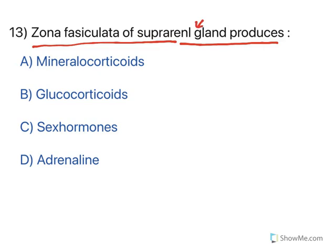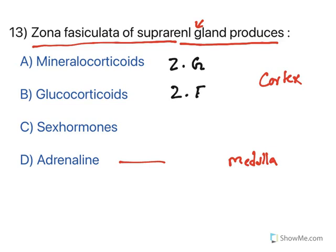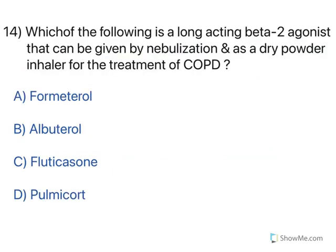Zona fasciculata of the suprarenal gland produces: the adrenal gland has medulla and cortex. The medulla releases adrenaline. The cortex has three zones — zona glomerulosa, zona fasciculata, and zona reticularis. Zona glomerulosa produces mineralocorticoids like aldosterone. Zona fasciculata produces glucocorticoids like cortisol. Zona reticularis produces sex hormones. So zona fasciculata produces glucocorticoids — option B is correct.